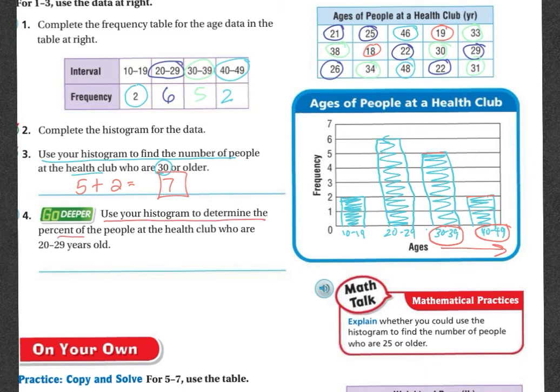use your histogram to determine the percent of people at the health club who are 20 to 29 years old. So here's my 20 to 29 years old. I go up to the top of it, and it is 6. So the answer is 6 people. Now, they want to know a percent. So I have 6 people, and I need to get a percent. That means I need to find out how many there were total.